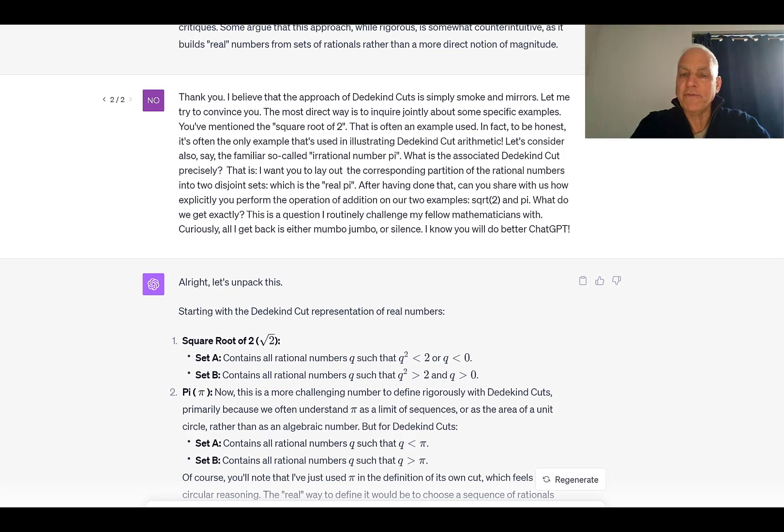Me: Thank you. I believe that the approach of Dedekind cuts is simply smoke and mirrors. Let me try to convince you. The most direct way is to inquire jointly about some specific examples. You've mentioned the square root of two. That is often an example used. In fact, to be honest, it's often the only example that's used in illustrating Dedekind cut arithmetic. Let's consider also, say, the familiar so-called irrational number pi. What is the associated Dedekind cut precisely? That is, I want you to lay out the corresponding partition of the rational numbers into two disjoint sets, which is the real pi. After having done that, can you share with us how explicitly you perform the operation of addition on our two examples, square root of two and pi? What do we get exactly? This is a question I routinely challenge my fellow mathematicians with. Curiously, all I get back is either mumbo jumbo or silence. I know you will do better.